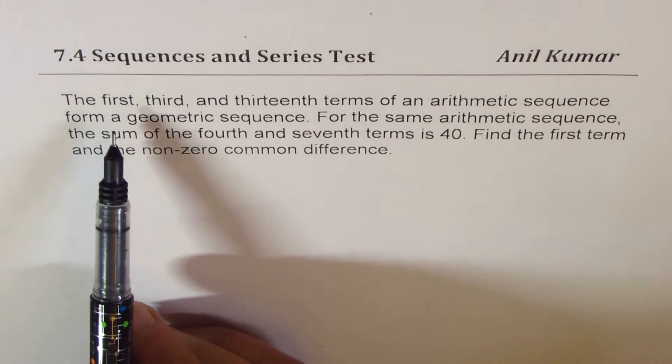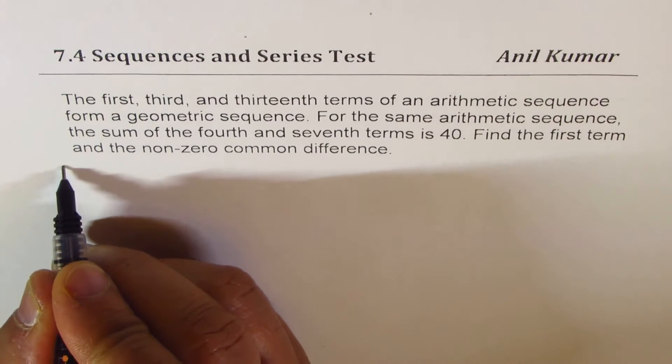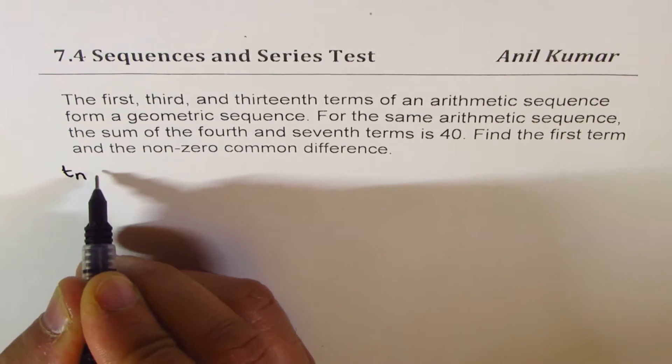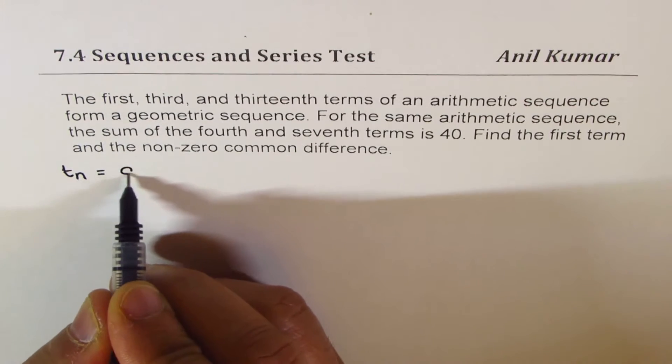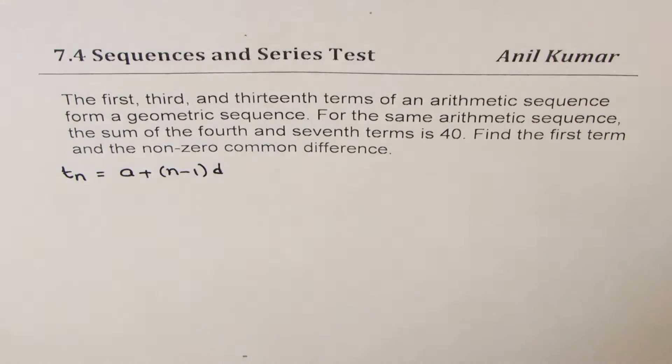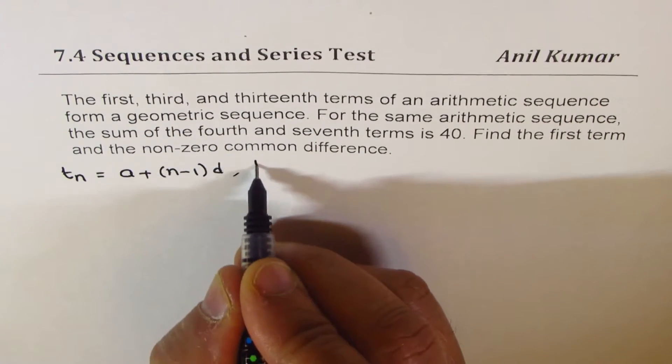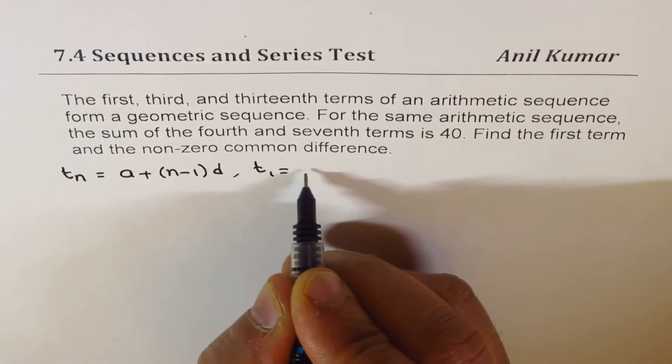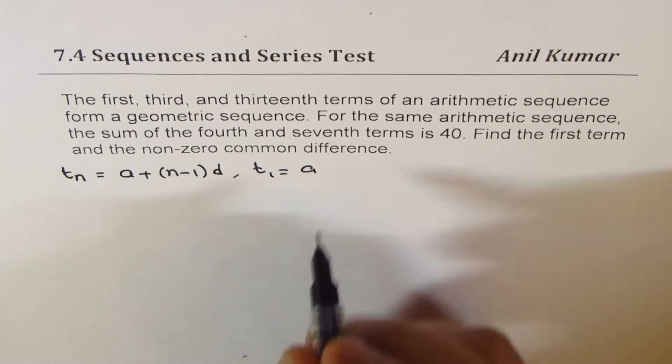Now we are given three terms of an arithmetic sequence. In general, any term tn in an arithmetic sequence can be written as a plus (n minus 1) times d, where d is the common difference. So if I have to write the first, third, and thirteenth term, then the first term will be a, since n is 1 and that term will be 0.